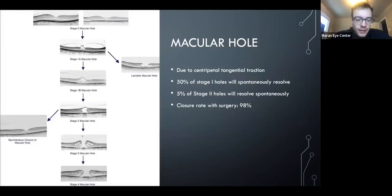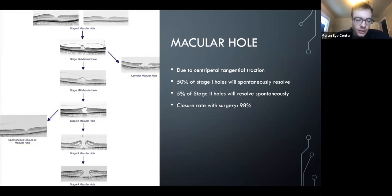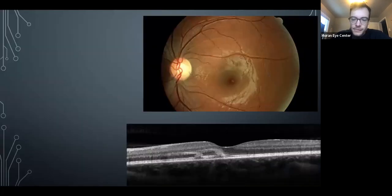Macular hole has a complicated grading system, but the key point is that once it becomes a full-thickness hole (stage 2), that's when we take them to surgery, which has a generally high success rate.